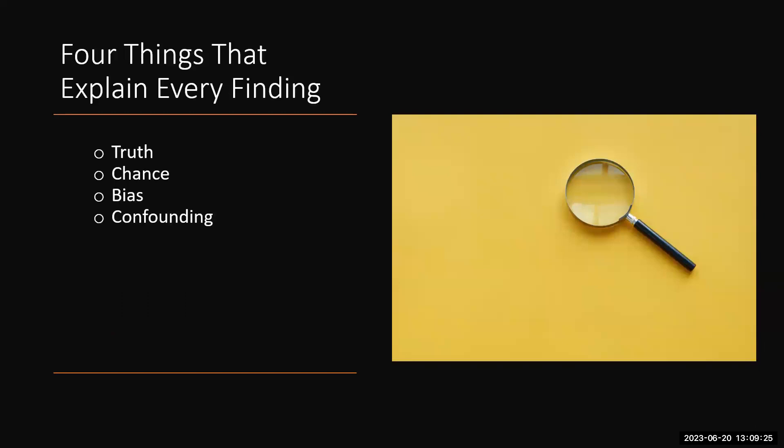Four things that explain every finding is truth, chance, bias, and confounding. Truth, that's what we're going for. Chance, we like to think that not too much is left to chance. That's why we have our confidence intervals, our P-values, statistical significance. That's all to make sure that our findings are due to research and not to chance. Biases and confounders are within our control. We can't eliminate them, but we should do what we can to minimize them.